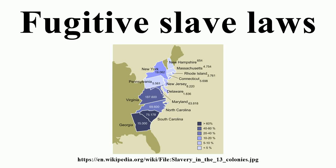The Fugitive Slave Laws were laws passed by the United States Congress in 1793 and 1850 to provide for the return of slaves who escaped from one state into another state or territory.